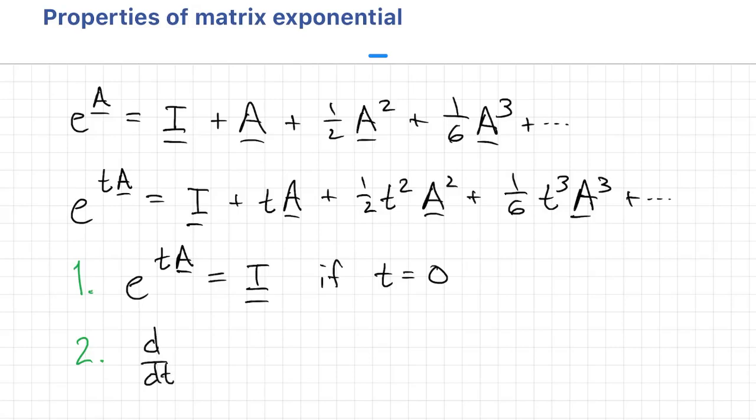The derivative of e^(tA) is A times e^(tA). But since multiplication is not commutative, we have to consider the other product too, and that's also equal: e^(tA) times A.